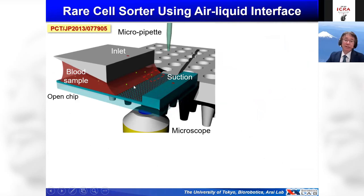One concern in micro/nanorobotics as well as robotics in general is the power system. You can make actuators that are really small, but it is really hard to make batteries and computers that are really small. When we build an autonomous system using micro/nano technologies, what is the ultimate solution to the power system problem?